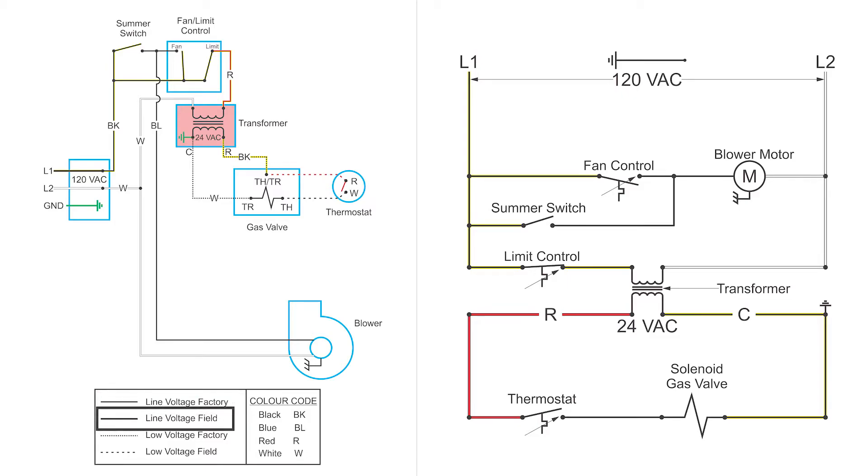The next one is low voltage factory. That's 24 volt wiring put in by the manufacturer. And low voltage field. And that is the low voltage wiring that's potentially put in by you going off to the thermostat.